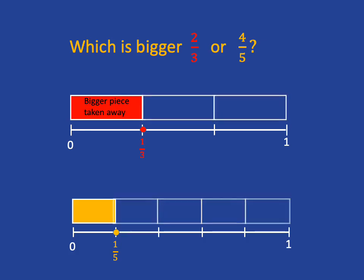Now you can easily see with two-thirds, you've taken away a bigger piece than with four-fifths, where you've taken away the smaller one-fifth piece. And so therefore, four-fifths is bigger than two-thirds.